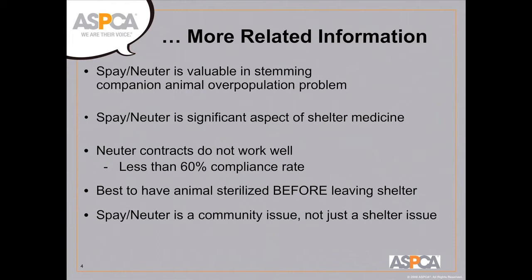In general, we think that neuter contracts do not work very well — that's when a shelter adopts an intact animal with the promise from the owner that they'll eventually get it spayed or neutered, possibly with a financial incentive like getting a deposit back. It's generally thought there's less than 60% compliance with spay-neuter contracts for adopted animals. It's best to have animals sterilized before leaving the shelter, and spay-neuter is a community issue, not just a shelter issue.